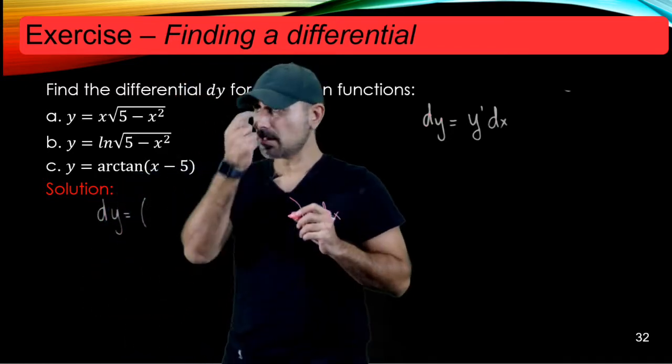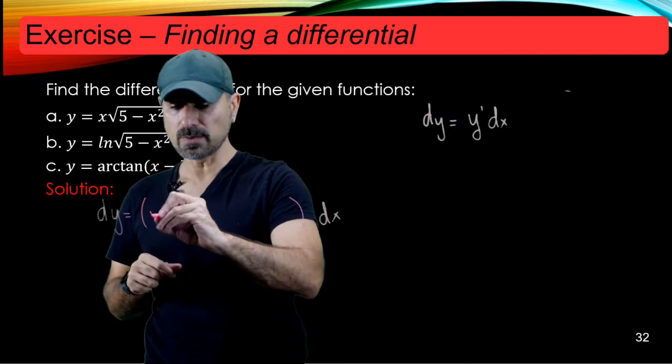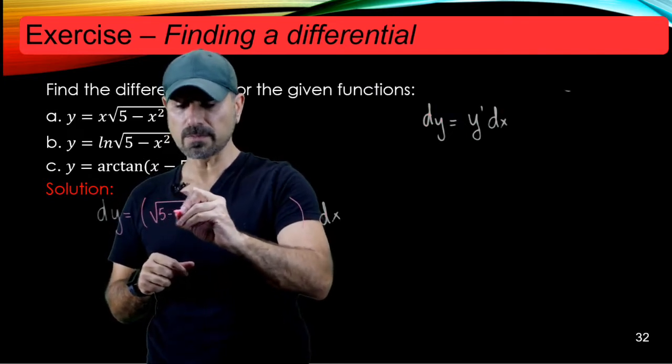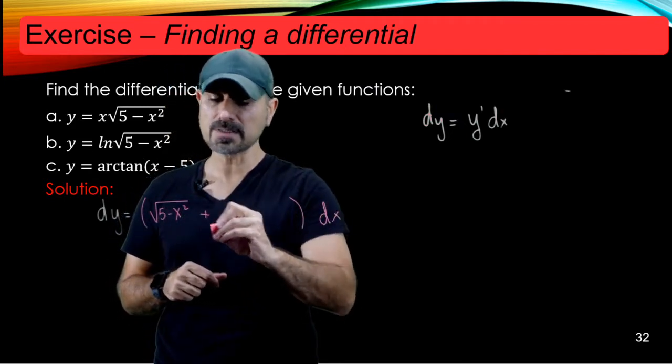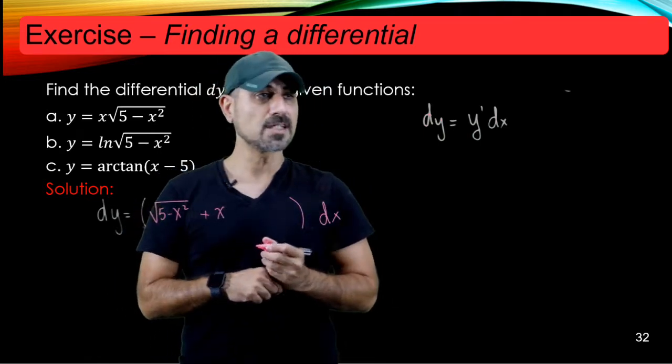Alright, so the derivative of the first term is 1, so 1 times the second function is radical 5 minus x squared plus you keep the first one and take the derivative of the second function.